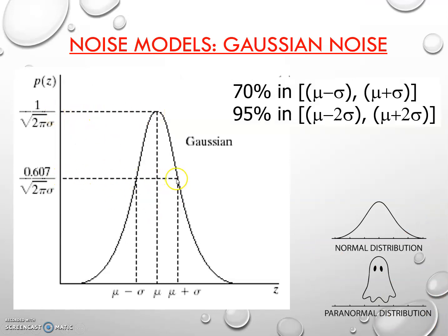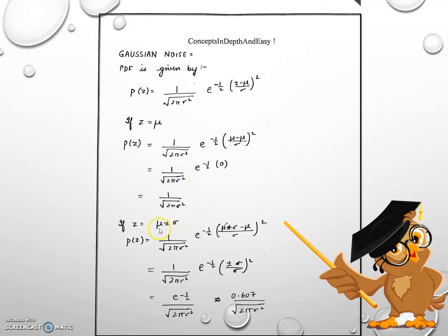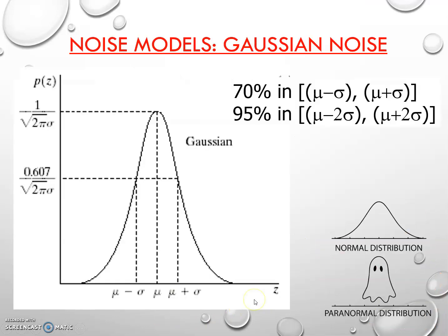Now, what about the value at μ ± σ? Put z = μ ± σ in the formula. μ cancels with μ, leaving ± σ, so (±σ/σ) squared is 1. This gives e to the power minus 1 by 2, times 1 by under root of 2π σ squared. The value of e to the power minus 1/2 is 0.607. That is how you get the second value.